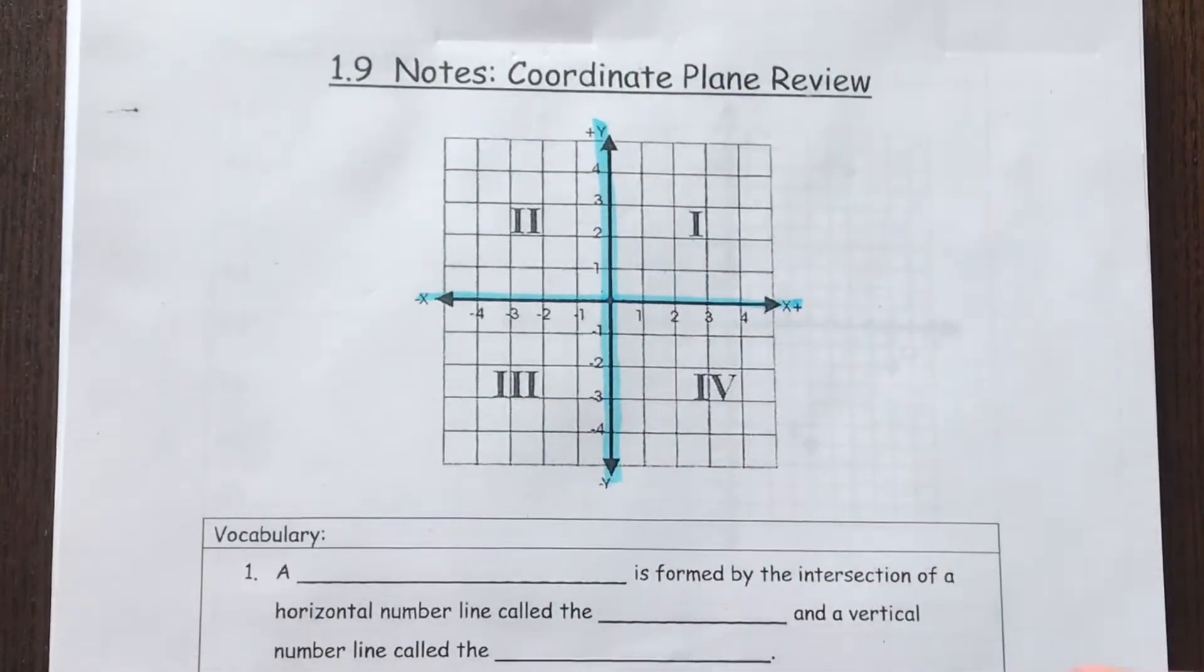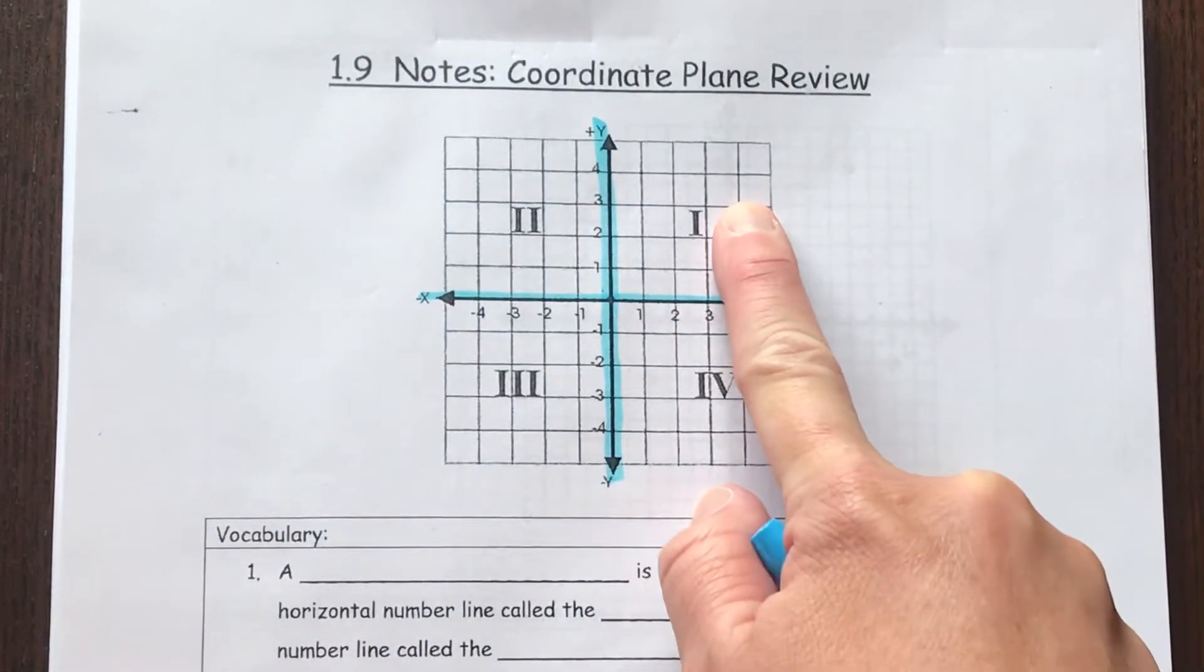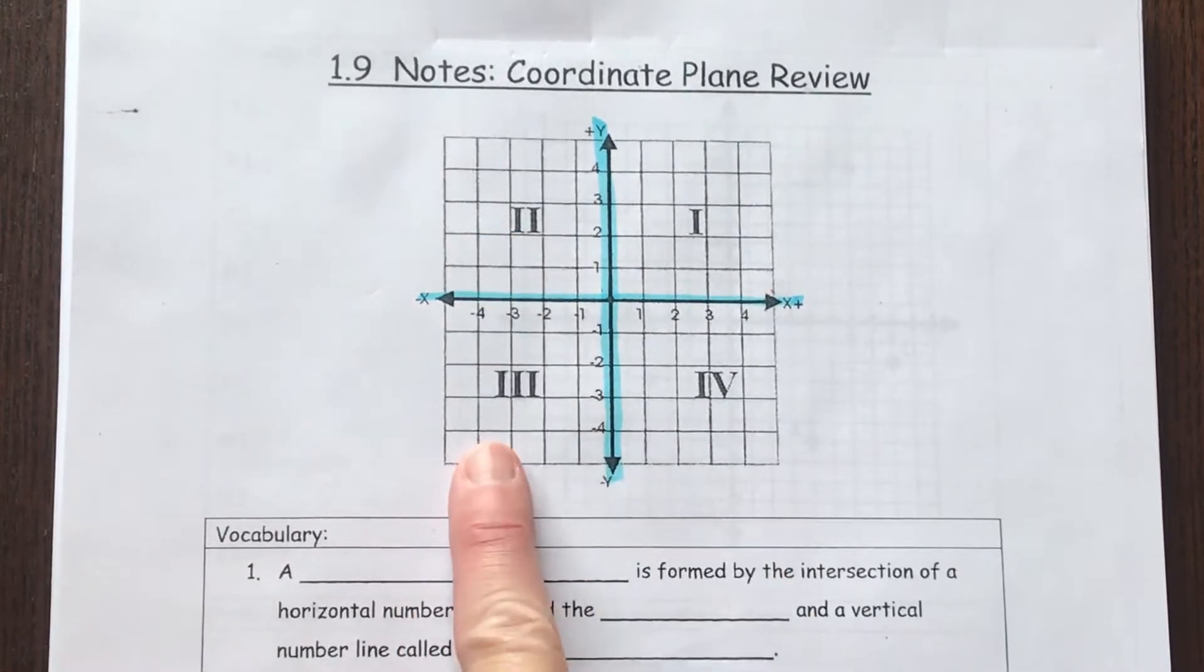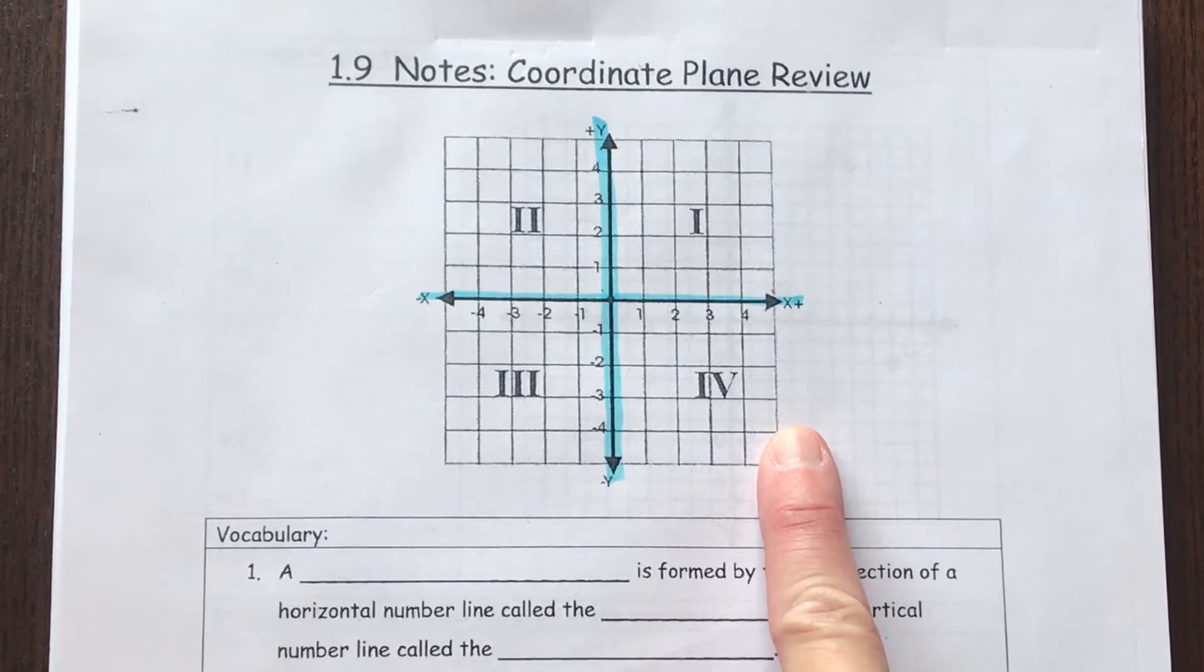And what happens is when they cross you get four quadrants. Quadrant one is in the top right, quadrant two is in the top left, quadrant three is the bottom left, and quadrant four is the bottom right.